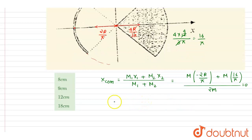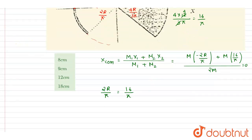So from here, if you see what you will write down, it is 2r by pi is equals to 16 by pi. So you can see here, the r is equals to 8 centimeter. This is what we got from here.